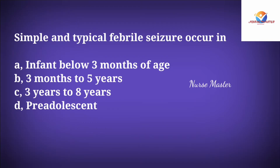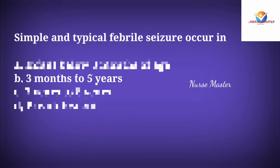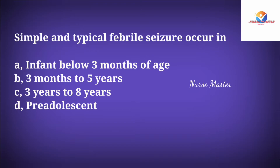Question: Simple and typical febrile seizures occur in which age group? Option A: Infant below 3 months. Option B: 3 months to 5 years. Option C: 3 years to 8 years. Option D: Adolescent. The correct answer is Option B: 3 months to 5 years. Febrile seizures occur in children between 6 months and 5 years of age, with greatest risk at 12 to 18 months.